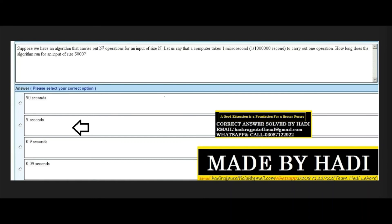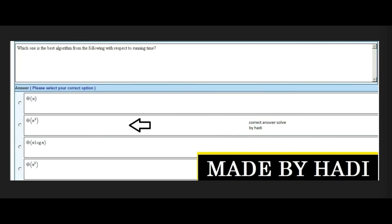Next MCQ: Which one is the best algorithm from the following with respect to running time? Options: N, N², N log N, or N³. The right answer is N log N — the third option — as it has the best running time among the given choices.